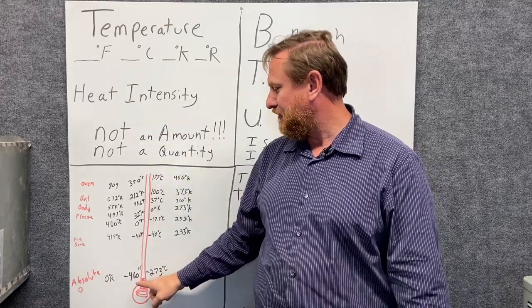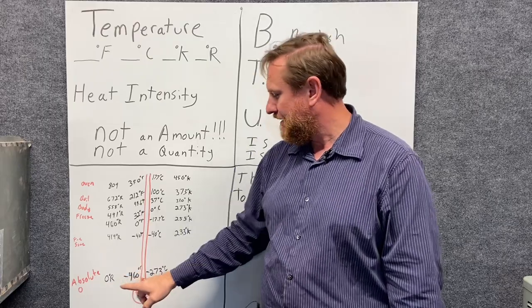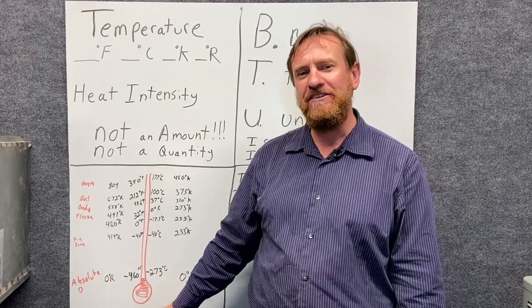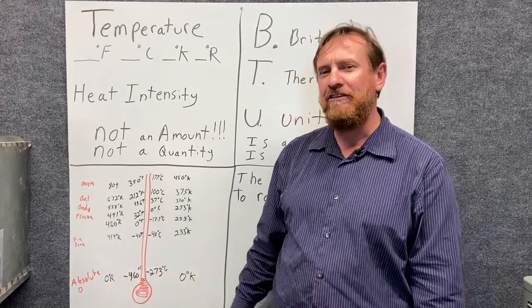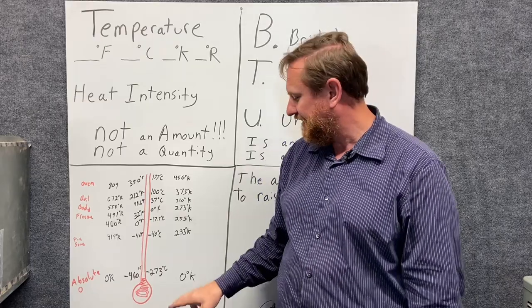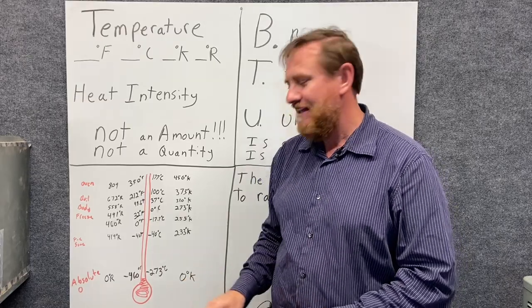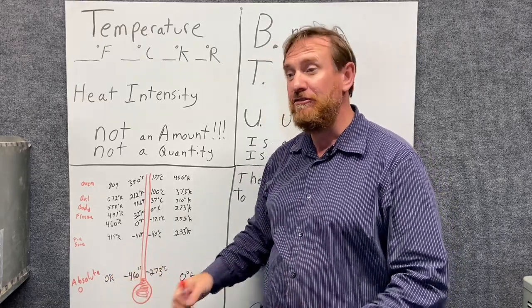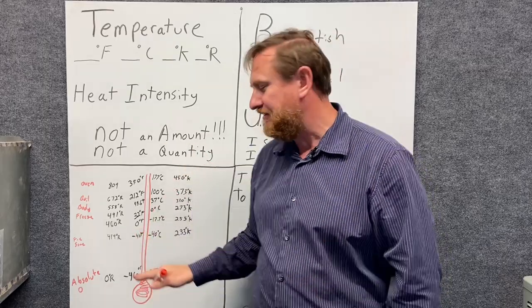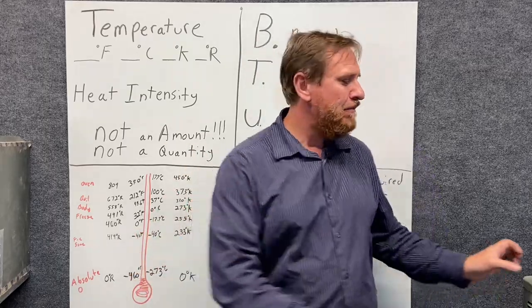Absolute zero, on any one of our scales right here, absolute zero is zero degrees Rankine, minus 460 degrees Fahrenheit, minus 273 degrees Celsius, and zero degrees Kelvin. That's all the exact same numbers. Those numbers have a different number, but it's all the same point. That's the same thing.